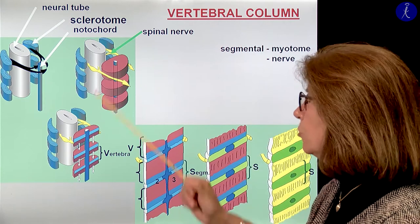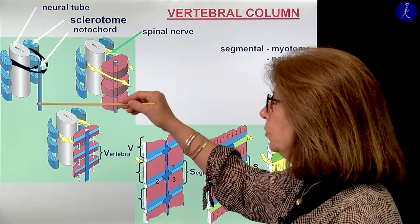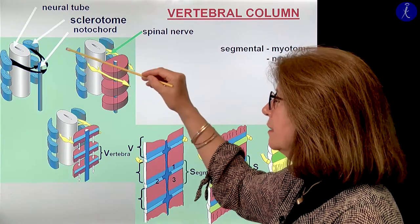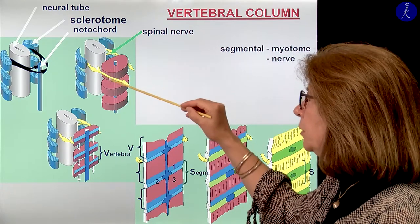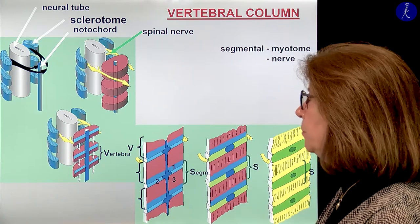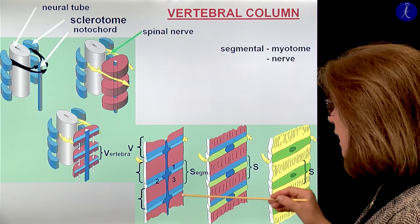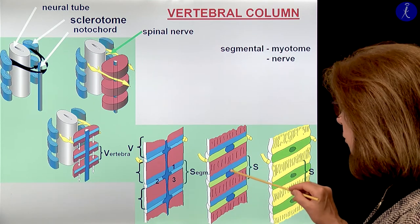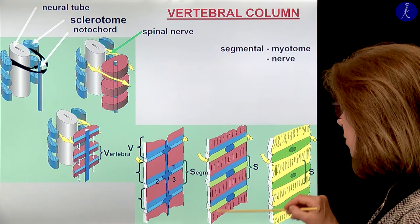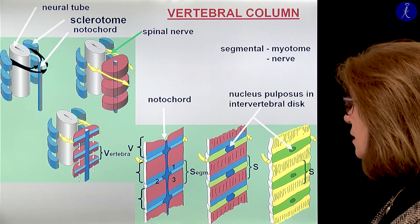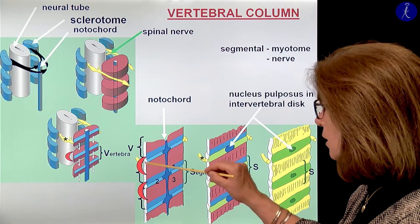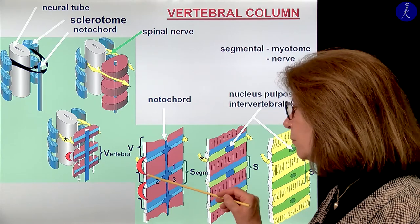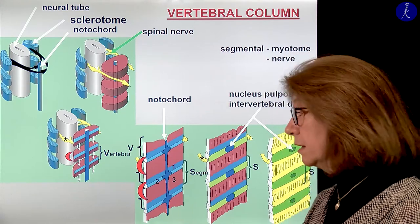About vertebral column formation: you have the notochord, neural tube, and sclerotome cells from the somites. They migrate ventrally and form the primitive vertebrae. Initially the nerve was in the middle of the primitive vertebrae, but this will be reorganized. A layer will form — the intervertebral discs — and the notochord will remain as the nucleus pulposus. The muscles which were originally in one segment now bridge over to connect two neighboring vertebrae; you'll find these small muscles in the deepest layer of the axial musculature. Due to this reorganization, the nerves originally in the middle of one segment will now be between two vertebrae.